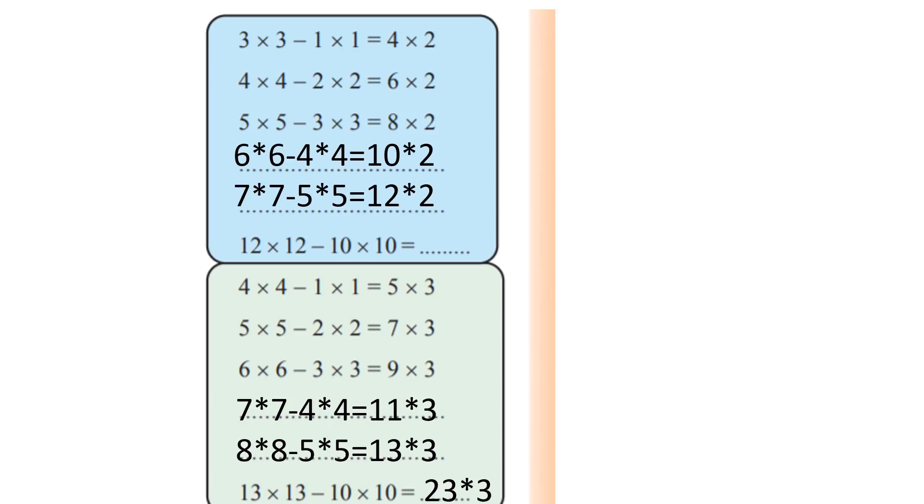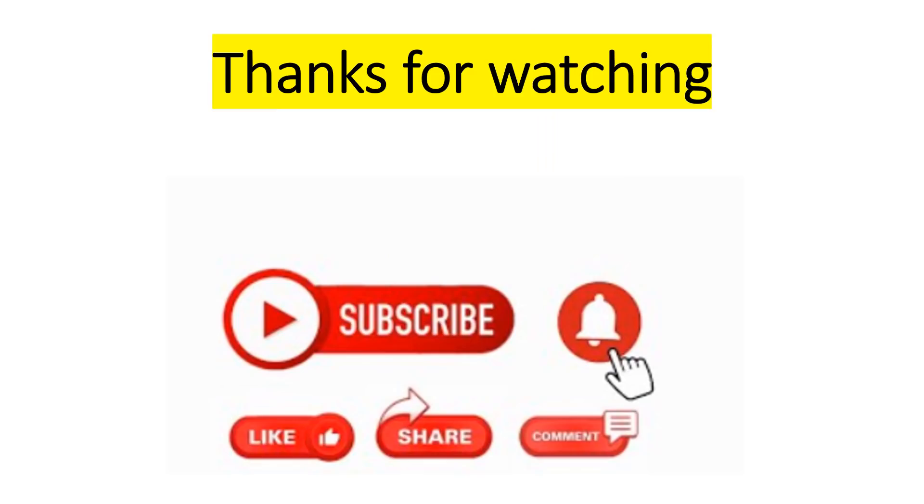4×4 minus 1×1 equals 5×3. 5×5 minus 2×2 equals 7×3. 6×6 minus 3×3 equals 9×3. 7×7 minus 4×4 equals 11×3. If you want to make it more than 13, this is the last one.